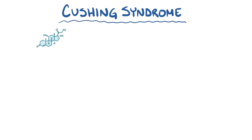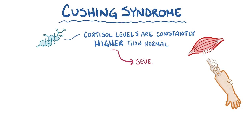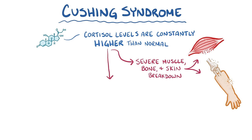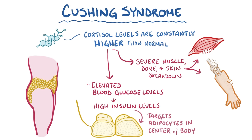In Cushing syndrome, cortisol levels are constantly higher than normal, so its effects are exaggerated. Excess cortisol leads to severe muscle, bone, and skin breakdown, which are the major protein stores of the body. It also leads to elevated blood glucose levels, and that leads to high insulin levels. Insulin preferentially targets adipocytes, or fat cells in the center of the body around the waist and buttocks. In those cells, insulin activates lipoprotein lipase, an enzyme that helps adipocytes accumulate more fat molecules. The result is central obesity.